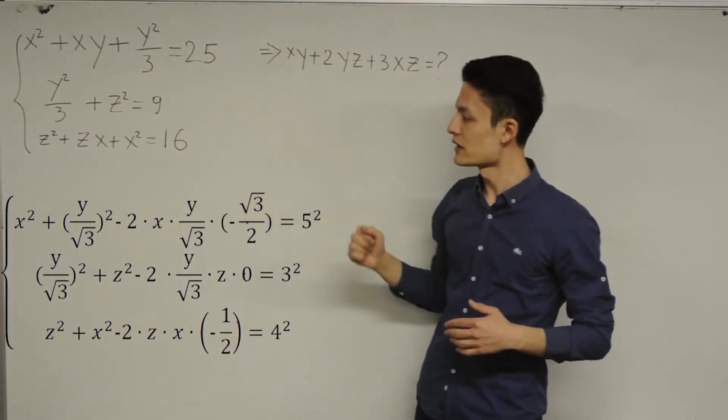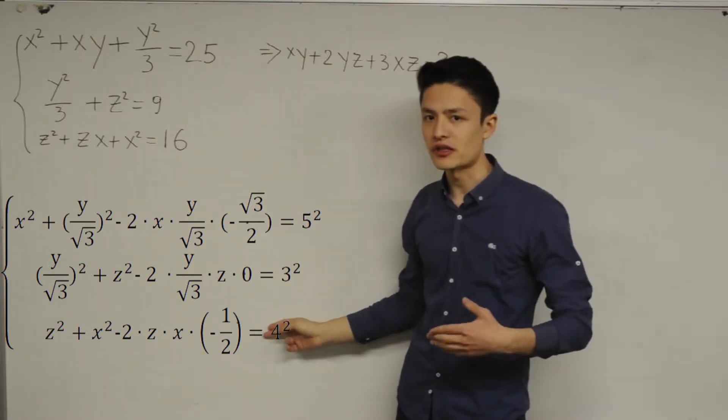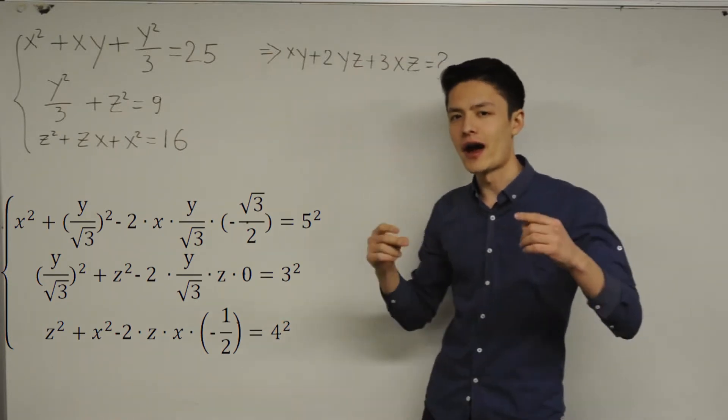And now, let's do the same thing with the third equation. We can write this third equation as this. So first, I'm writing z squared plus x squared and then minus 2 times zx times minus 1 over 2.